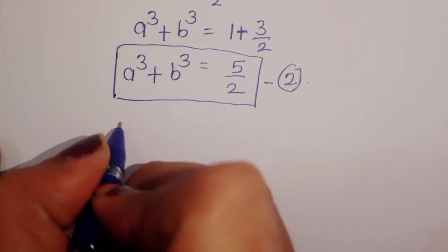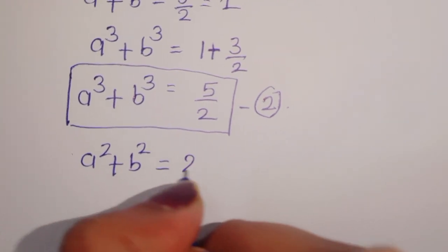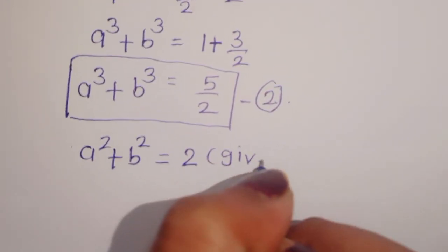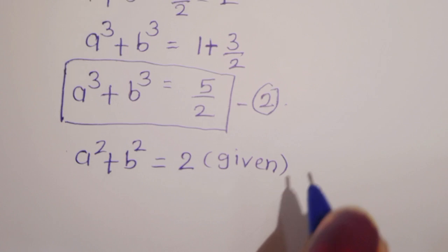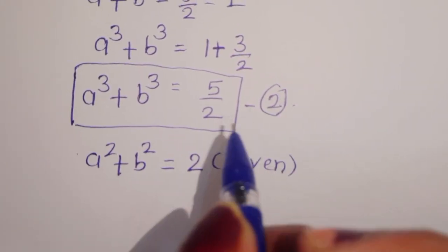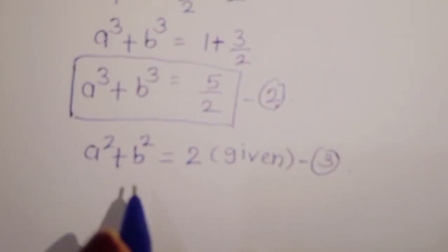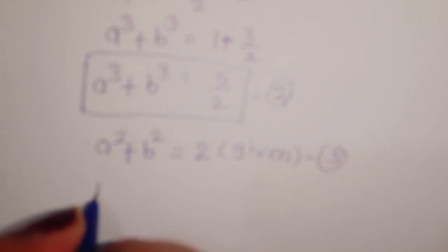Now a square plus b square is equal to 2 — this is given, equation 3. We can multiply equation 2 and equation 3.